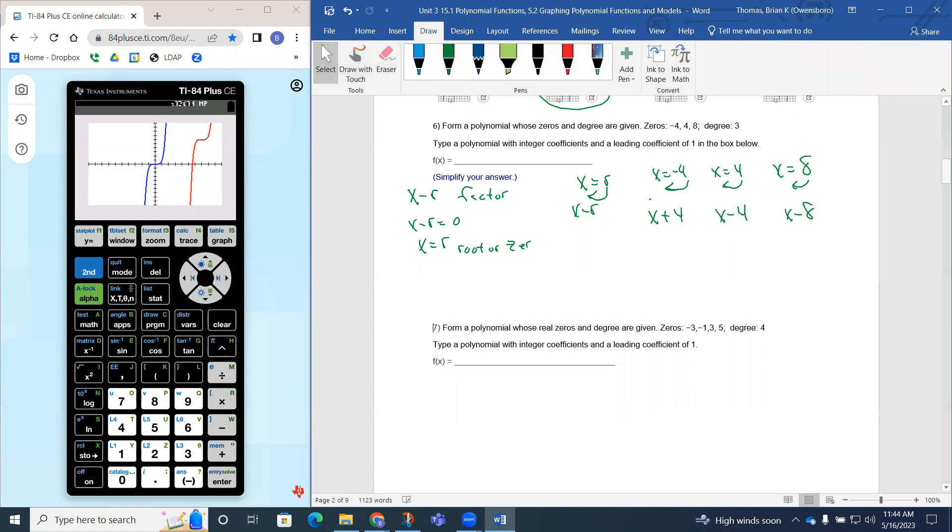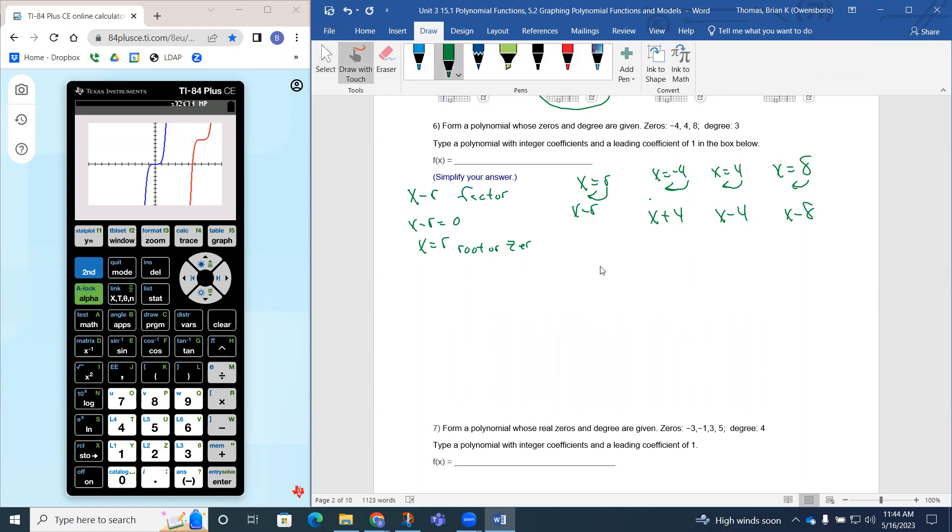So I need some more room here. So what happens is our function is going to be then f of x. In factored form, it's going to be x plus four, x minus four, x minus eight. That's going to be the actual polynomial function.